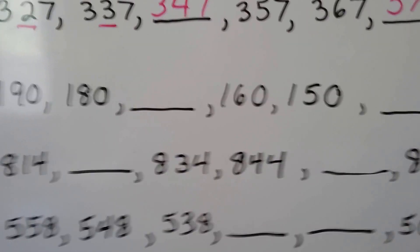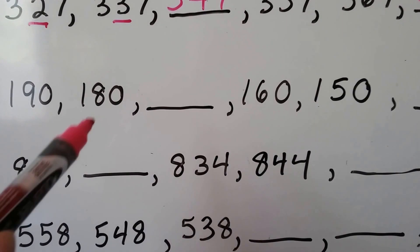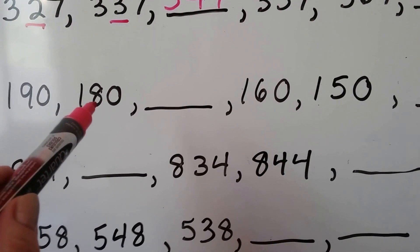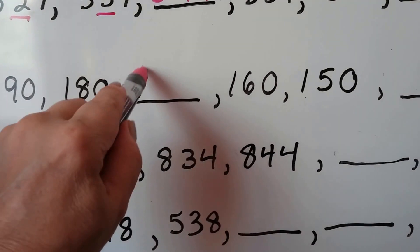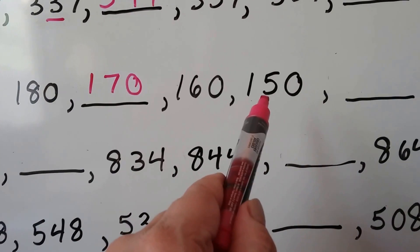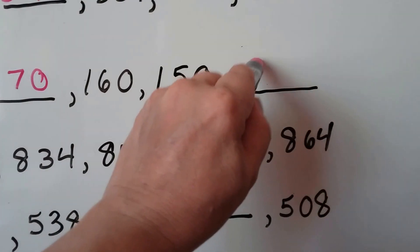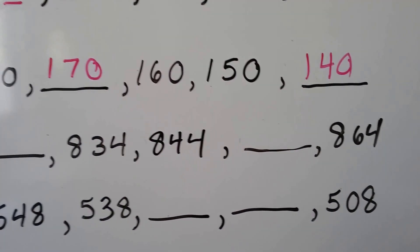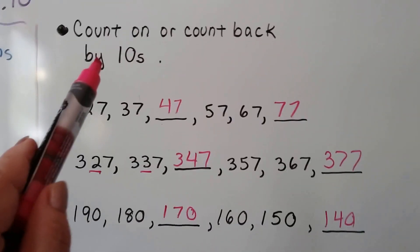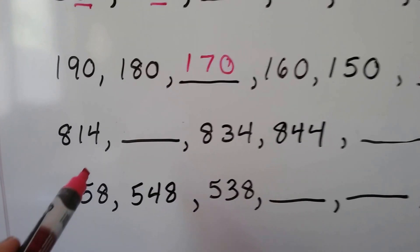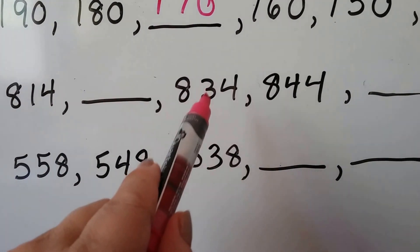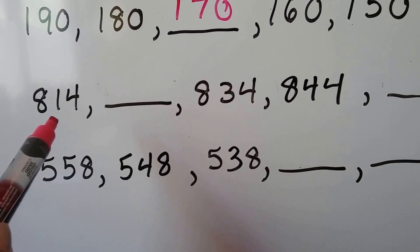Let's try: we have 190, 180 — what's happening in the tens place? It went from nine to eight, so it's getting smaller, meaning we're counting back. The next one would be 170, one less ten. Then we have a six in the tens place, a five in the tens place, so that would be a four in the tens place — 140. Now remember: the instructions say count on or count back by tens, so we're only looking at the tens place.